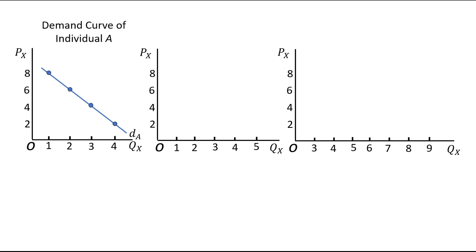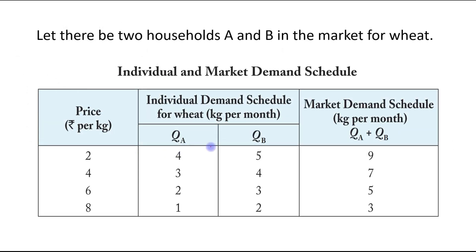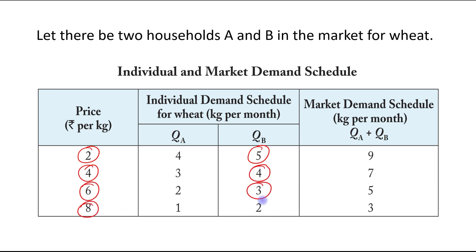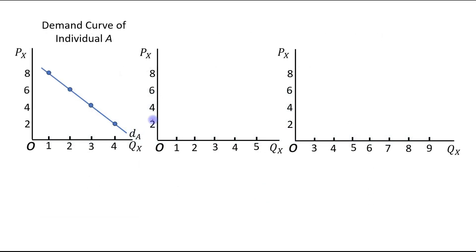Next, we will draw the individual demand curve for consumer B. At a price of rupees 2 it is 5 kg, at a price of 4 it is 4 kg, at a price of 6 it is 3 kg, and at a price of 8 it is 2 kg. In the second panel we will plot these values. At a price of 2 it is 5 kg, so we mark this point.